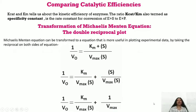Comparing catalytic efficiencies of enzymes: the ratio kcat/Km is termed the specificity constant, which defines the kinetic efficiency of an enzyme — the rate constant for conversion of E + S to E + P. A higher value of kcat/Km means a higher specificity constant and a higher rate of conversion, reflecting greater kinetic efficiency.